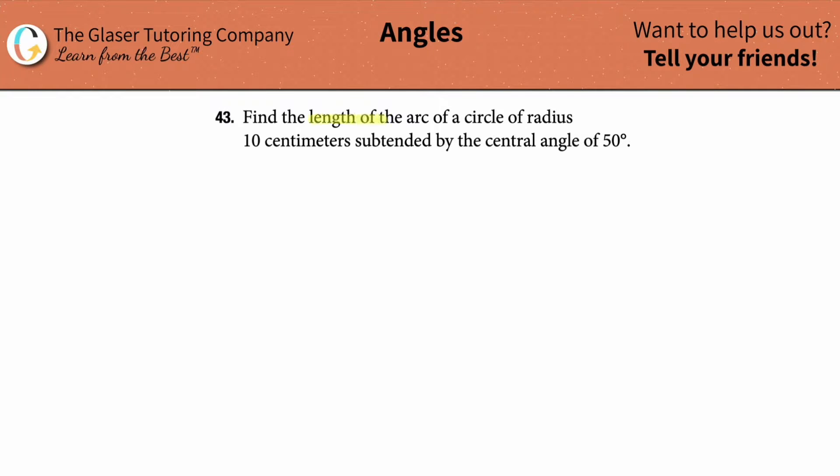Number 43, find the length of the arc of a circle of radius 10 centimeters subtended by the central angle of 50 degrees.